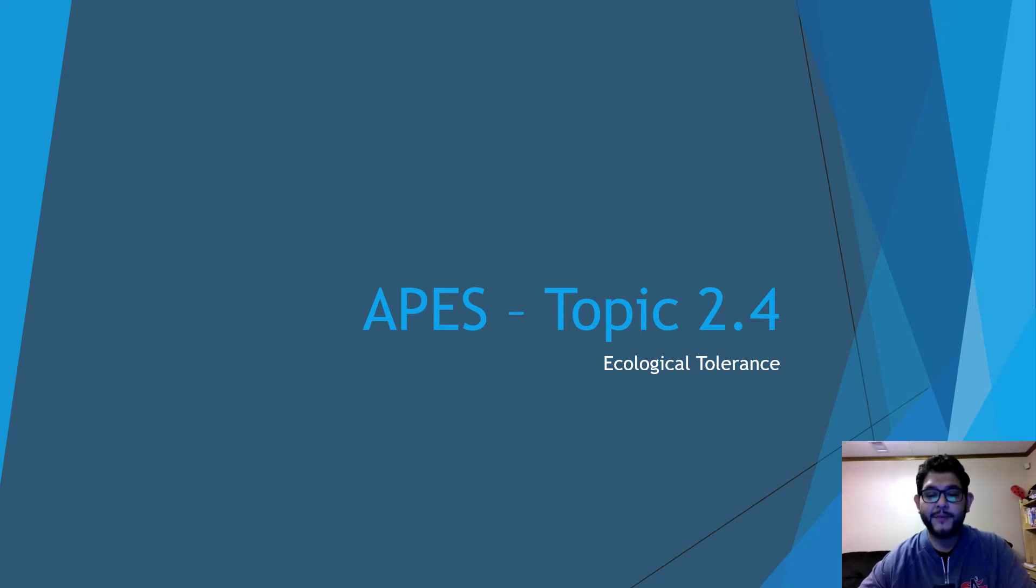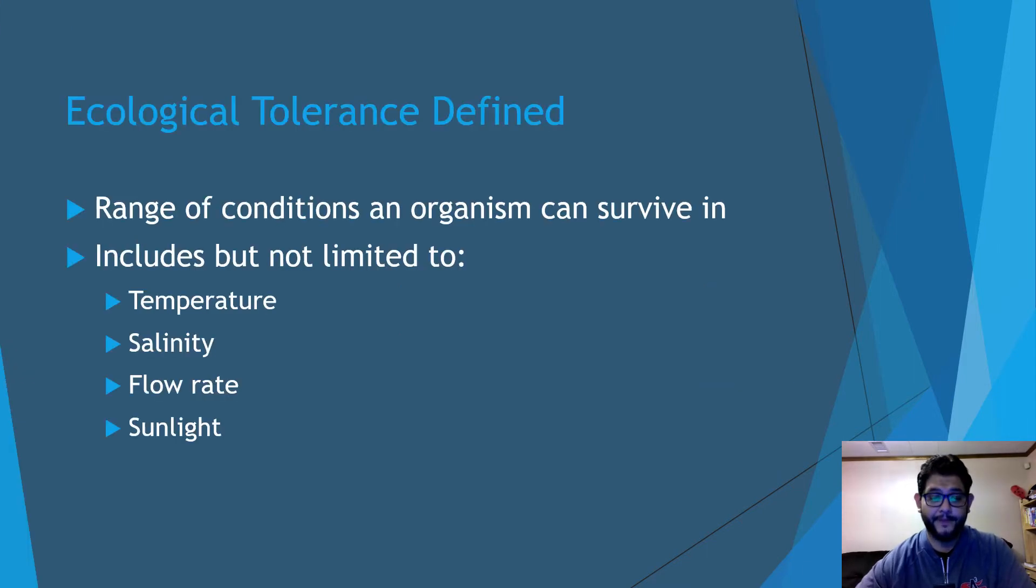Hey guys, this is Mr. V, and this is episode four of unit two of the APES review videos: ecological tolerance. This video is pretty short, but basically, the idea of ecological tolerance is that there is a range that organisms can survive in.